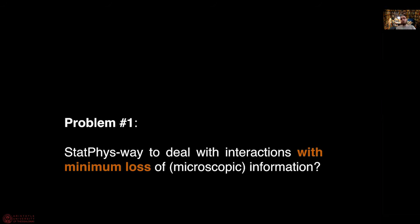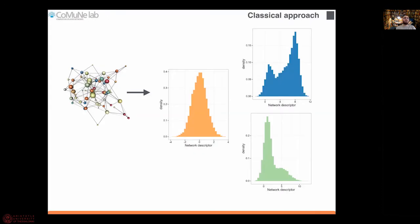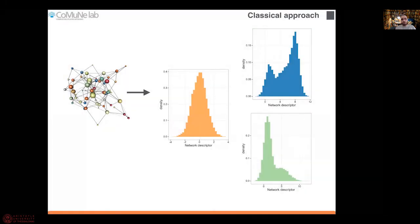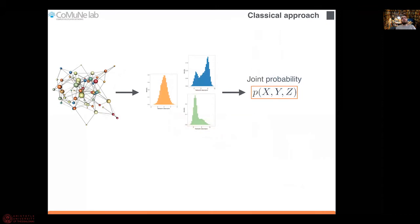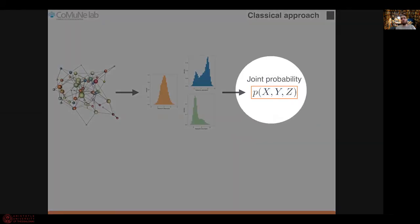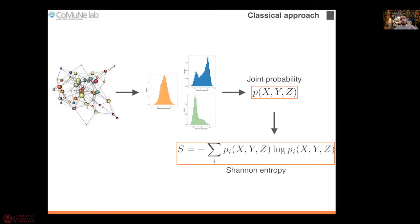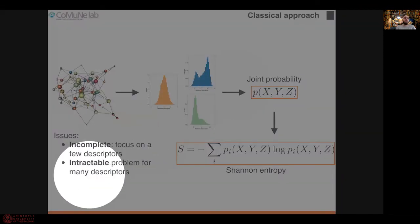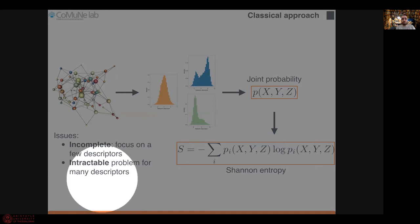A classical approach is to start from a network and then extract some descriptors, such as centralities or distribution of distances between nodes. You put all that information together by building, for instance, the joint probability distribution, and then you write some macroscopic function of the network, like the Shannon entropy. However, there is a problem with this approach: it's incomplete because it focuses only on a few descriptors, and even if you add more descriptors, at some point the problem becomes intractable because of the many variables involved.